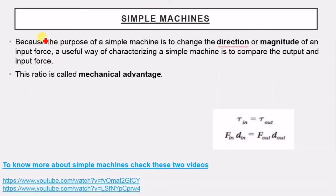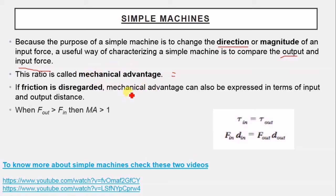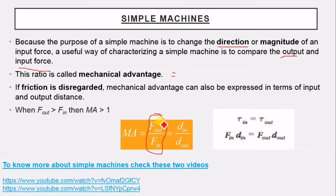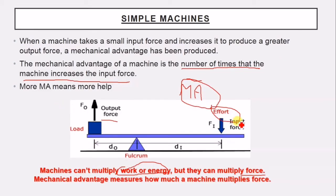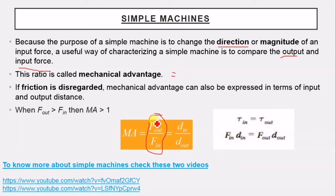Always, when talking about a machine, think about the input force — the force you exert on the machine — and the output force — the force exerted by the machine on the object. We compare the output with the input force. This ratio is the mechanical advantage: MA = output force ÷ input force. For example, if output is 200 and input is 100, MA = 200/100 = 2.